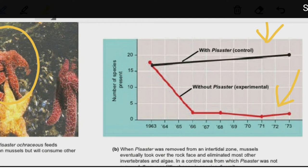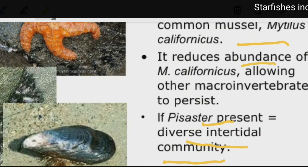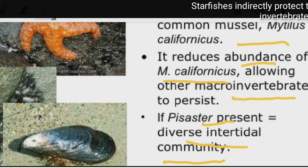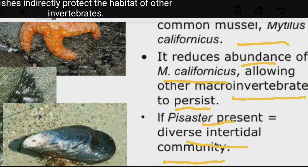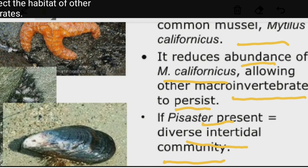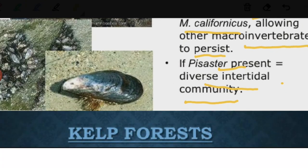This species of starfish is an efficient predator of the common mussel Mytilus californicus, reducing its abundance. The starfish protects the macroinvertebrates that the mussels would otherwise not allow to flourish. In the absence of starfish, mussels cover the rock faces, destroying the habitat of most macroinvertebrates — showing how this starfish shapes the intertidal community.